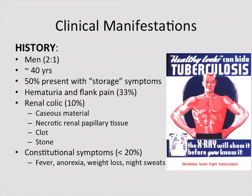Clinically, the manifestations of TB are non-specific and vague, but they are often the first clue for diagnosis. Men are more commonly affected, usually presenting in their fourth decade. About 50% present with storage symptoms — urgency, frequency, occasional dysuria. About 33% will have hematuria or flank pain, and about 10% will have renal colic. Interestingly, only 20% will present with constitutional symptoms. Physicians need a high clinical index of suspicion, especially if initial medical management fails to treat the symptoms.